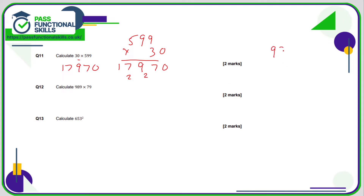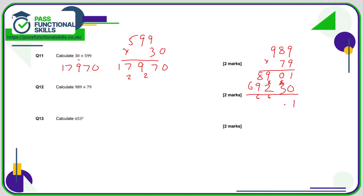Question 12: 989 times 79 — some nasty combinations, so we need to be very careful. 9 nines are 81, 1 carry 8; 8 nines are 72 plus 8 is 80, 0 carry 8; 9 nines are 81 plus 8 is 89. Put in a 0 for the 7 of 70: 7 nines are 63, 3 carry 6; 7 eights are 56 plus 6 is 62, 2 carry 6; 9 sevens are 63 plus 6 is 69. Adding together, the answer is 78,131.